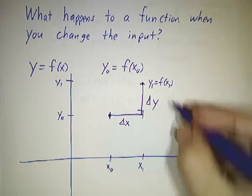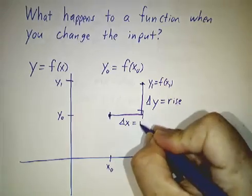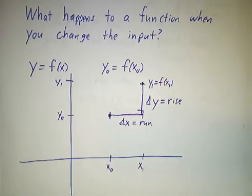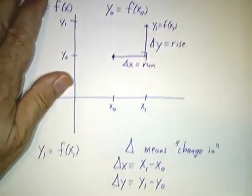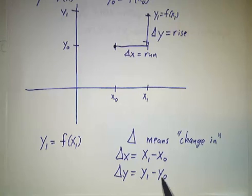Now sometimes we call delta y the rise. Sometimes you call delta x the run. We use the Greek letter delta to mean the change in anything. So delta x is the change in x. How much x has changed when going from x0 to x1? Delta y is the change in y. We're always tracking the changes.